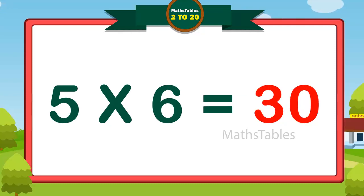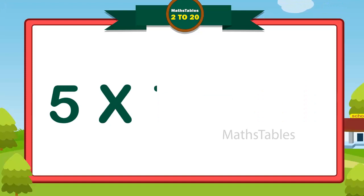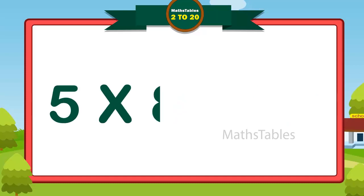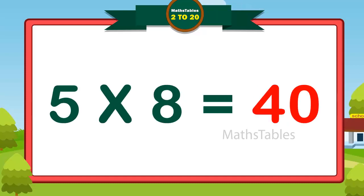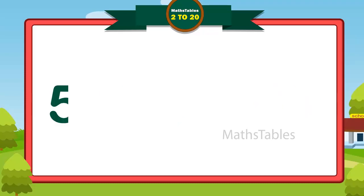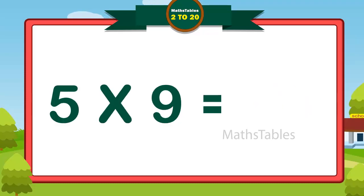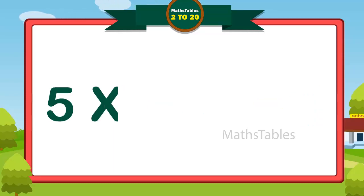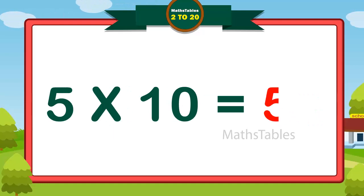Five sevens are thirty-five. Five sevens are thirty-five. Five eights are forty. Five nines are forty-five. Five nines are forty-five. Five tens are fifty.